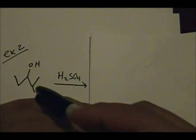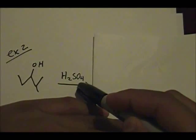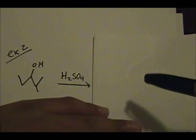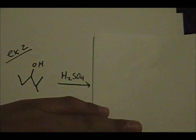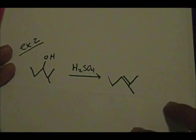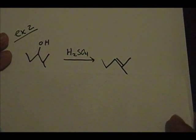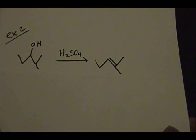The second example: we have a secondary alcohol reacting with H₂SO₄. The product of this reaction is this alkene. Let's go over the reaction mechanism of how I came up with this alkene.